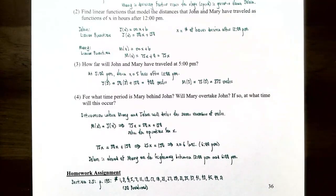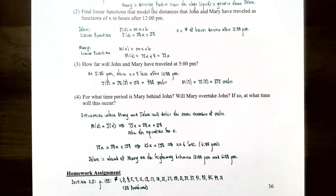This finishes our video on linear functions and models. We talked about how to identify linear functions in terms of constant rate of change, slope, and y-intercept, and how to construct a linear model using its rate of change. If you have any questions about examples in this video or while working on homework for this section, please let me know. I'll see you at the next video when we talk about transformations of functions.